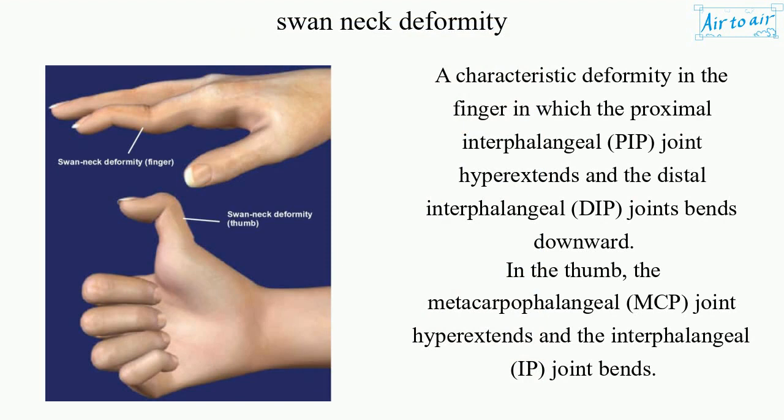In the thumb, the metacarpophalangeal (MCP) joint hyperextends and the interphalangeal (IP) joint bends.